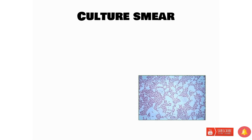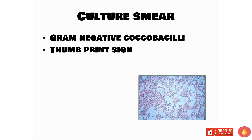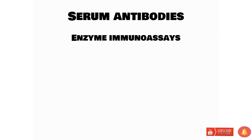On culture smear microscopy you can see gram-negative coccobacilli which are Bordetella pertussis. The typical appearance on culture smear microscopy is called the thumbprint sign — bacteria colonized together resembling a thumbprint on paper. To summarize: on culture media you see the mercury drops appearance, and on culture smear microscopy you see the thumbprint sign. Serum antibodies are mainly elevated during the convalescent phase and can be detected by enzyme immunoassays like ELISA.